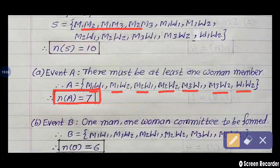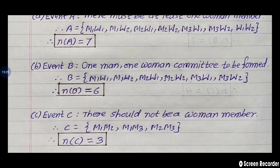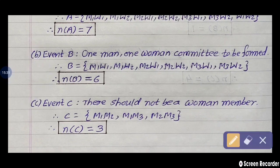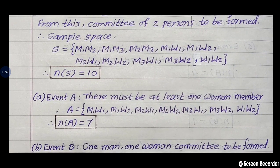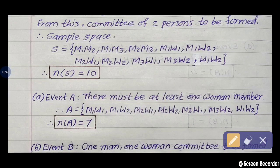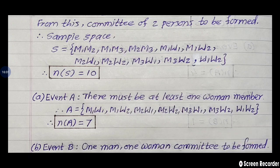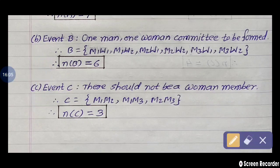Check event B: one man and one woman committee to be formed — compulsory one man and one woman is required. The first three points and the last point are omitted. In the remaining points, one man and one woman are present. That is why the total answer is 6, and N of B is equal to 6.